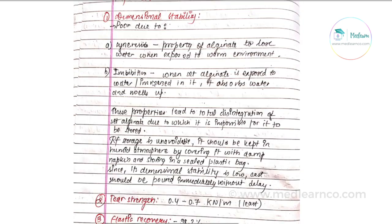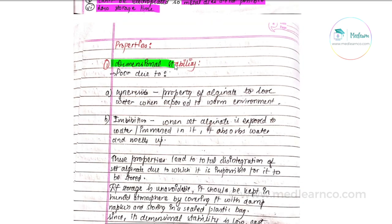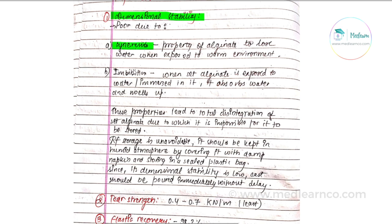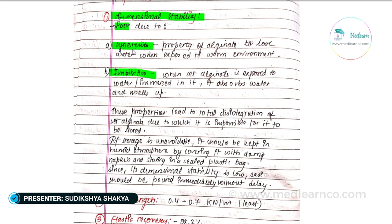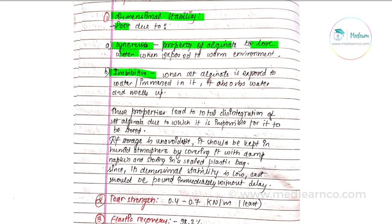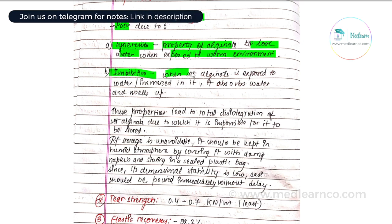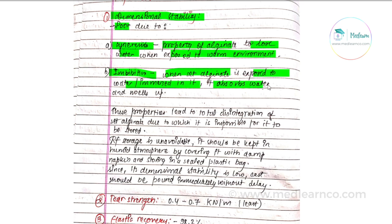Properties of alginate: the most important is dimensional stability, which is poor due to syneresis and imbibition. Syneresis is the property of alginate to lose water when exposed to a warm environment. Imbibition is when the set alginate is exposed to water, it absorbs water and swells up. These two properties together lead to poor dimensional stability.